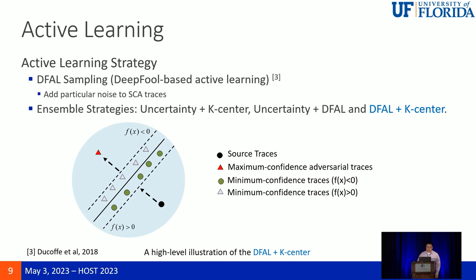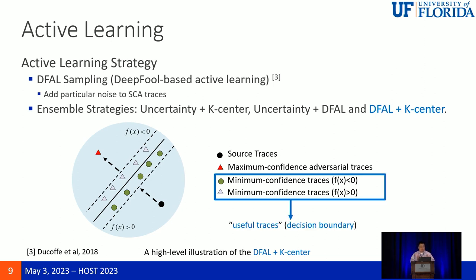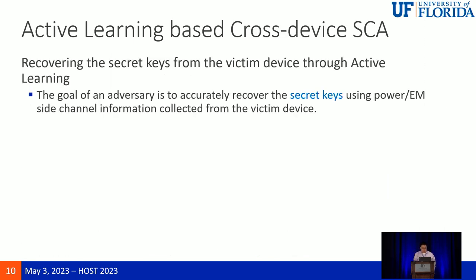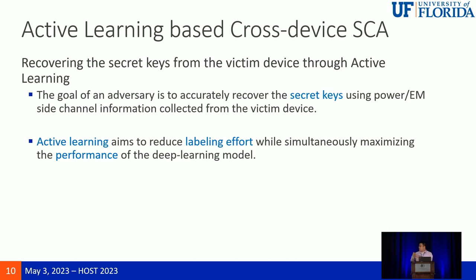The tested combinations show that DFAL plus core-center achieves the highest performance. For DFAL, those methods push all data to approach the decision boundary, and using such data for training gives the model better performance. This active learning approach is utilized in side-channel attacks to recover keys from both power and EM side-channel information — this method considers both. Cross-device means training on one device and attacking another; cross-domain means training on power traces and attacking using EM traces or vice versa.